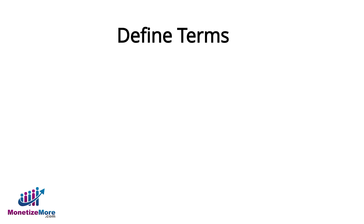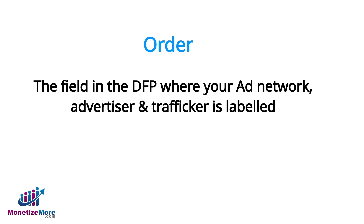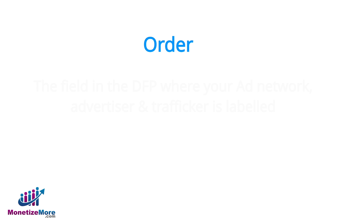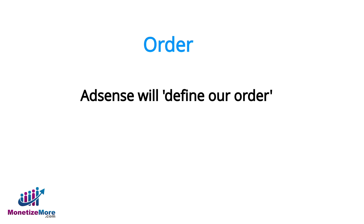Before we begin, let's define a few important terms. An order refers to the field in DFP where we label our ad network, advertiser, or ad trafficker. In other words, if Company A wants to buy ad space on our site, our first step to setting them up is to create their order. In our case, AdSense will define our order, as all subsequent line items within this order will pertain only to AdSense.